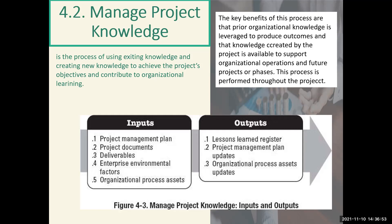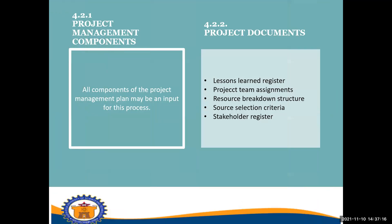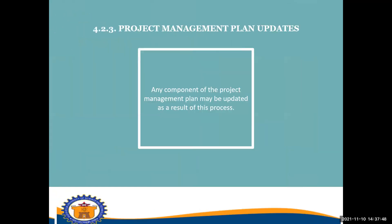For the outputs, we have: number one, lessons learned register; number two, project management plan updates; and number three, organizational process assets updates. The needs of the project determine which components of the project management plan and which project documents are necessary. All components of the project management plan may be inputs for this process. Examples of project documents that may be inputs include but are not limited to: lessons learned register, project team assignments, resource breakdown structure, source selection criteria, and stakeholder register. Any component of the project management plan may be updated as a result of this process.